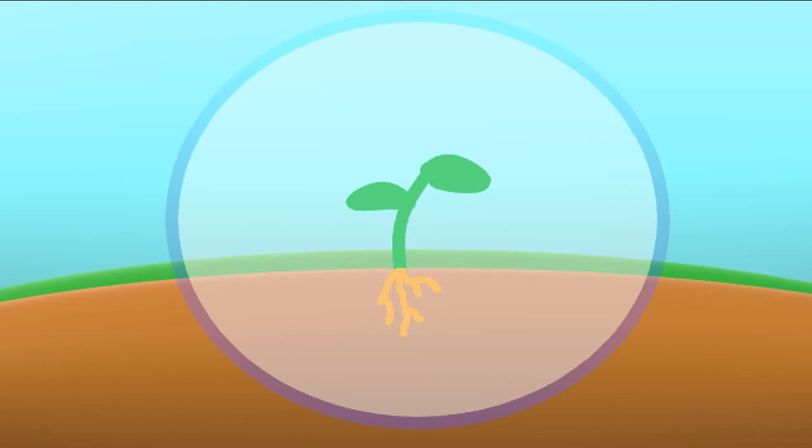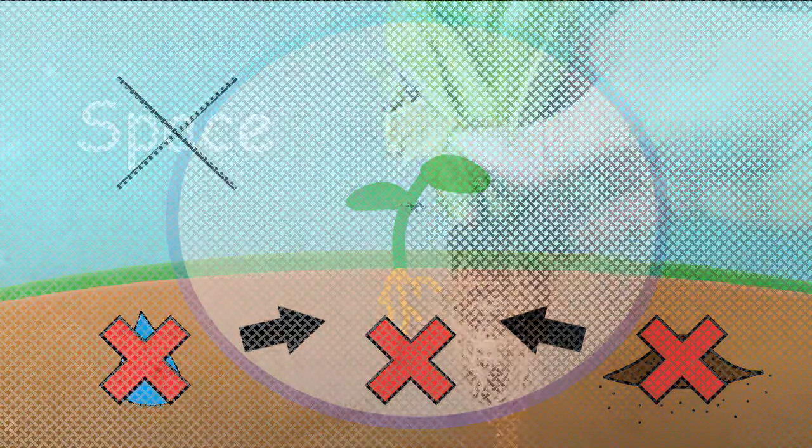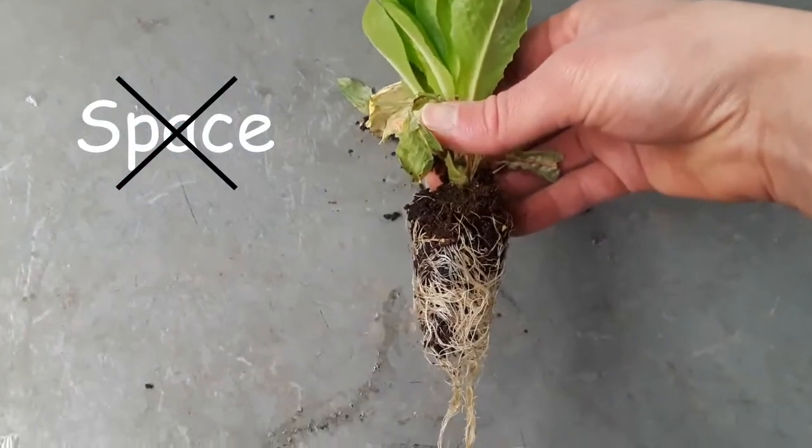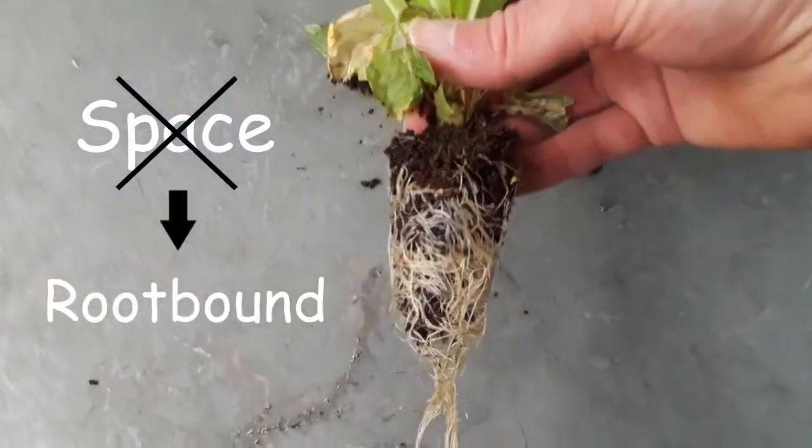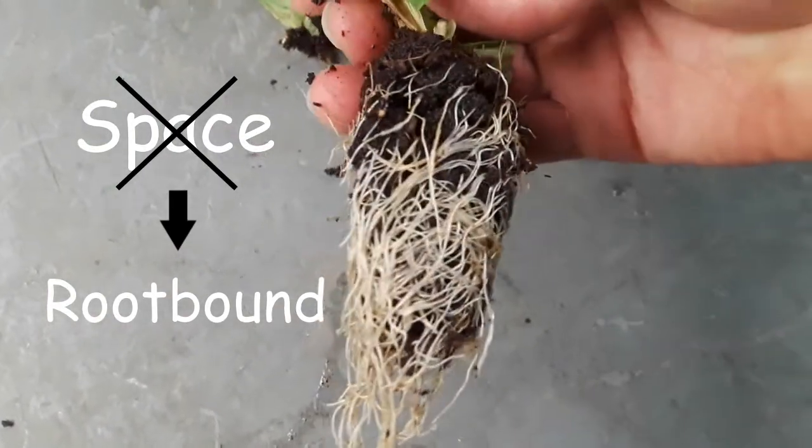Plants also need plenty of space below them so their roots can spread out. Plants use their roots to take in water and nutrients, and if the roots don't have enough space, they won't get enough of these essential substances. A plant that doesn't have enough space for its roots can become root bound, which is when its roots get tangled up in a knot and it basically strangles itself.